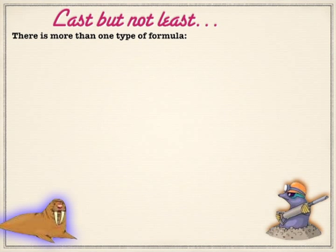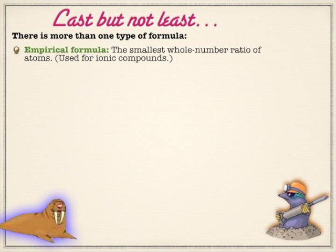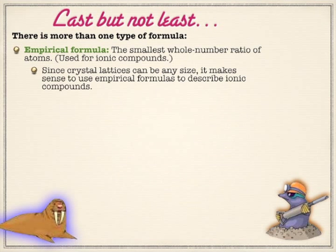As we've talked about before, there are two types of formula we're worried about right now. Empirical formulas are the smallest whole number ratio of atoms. That makes a lot of sense for ionic compounds because a crystal lattice is made up of a lot of ions in all different directions, so we find the lowest ratio. Table salt is not just one Na and one Cl — it's a lot of each, but it's a one-to-one ratio, so we use the empirical formula.